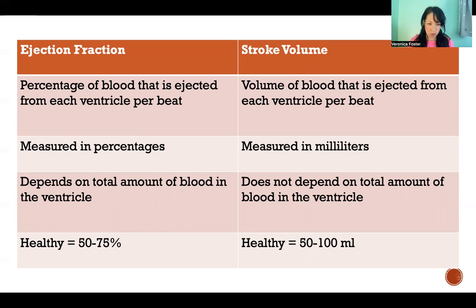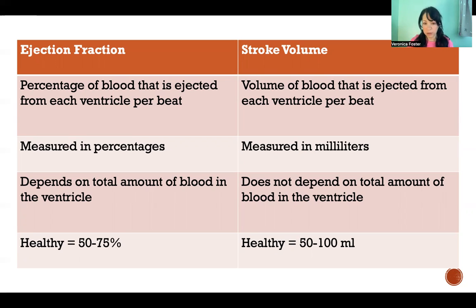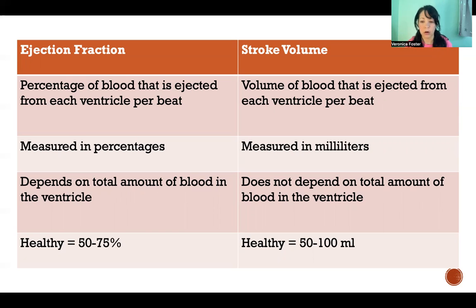A healthy ejection fraction is considered to be 50 to 75%, meaning that for each heartbeat, 50 to 75% of the blood in each ventricle is ejected. The healthy stroke volume range is 50 to 100 milliliters, meaning that regardless of how much blood the ventricle filled with, 50 to 100 milliliters of blood is ejected per beat.